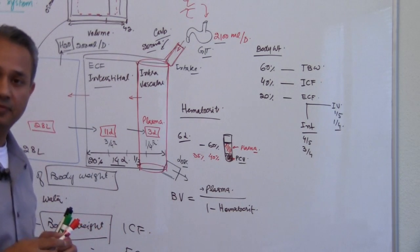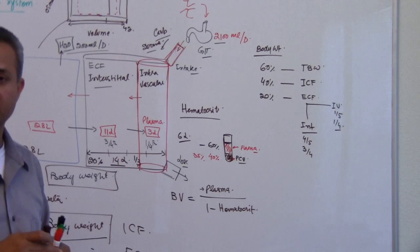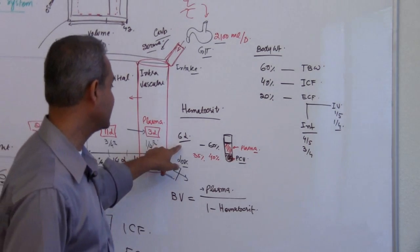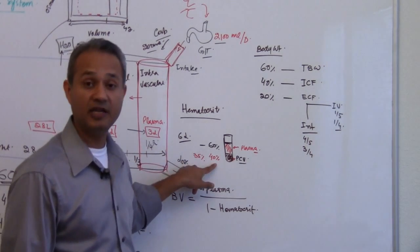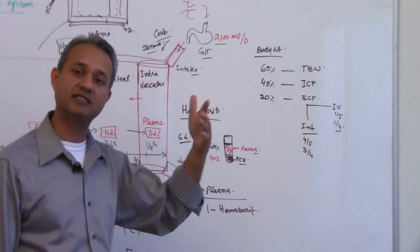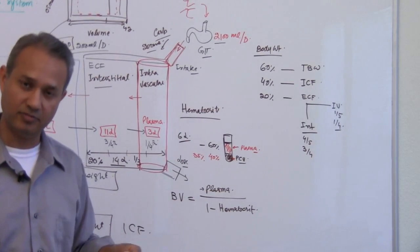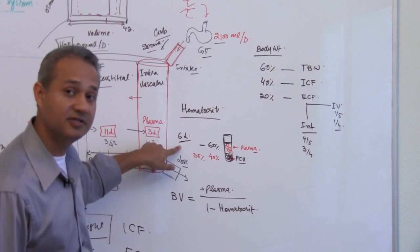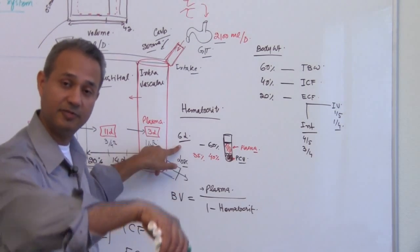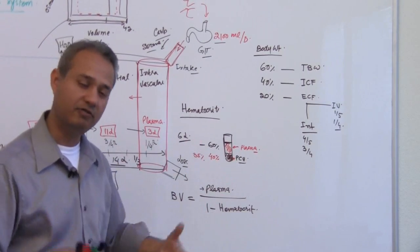That is 60%. So 6 liter plasma means 60%, and the remaining 40% should mean 4 liter, so he has 10 liter blood volume. Normally that is not the case. If he has 3 liters, then instead of the remaining 4 he would have 2, so that is 5 liter blood volume.